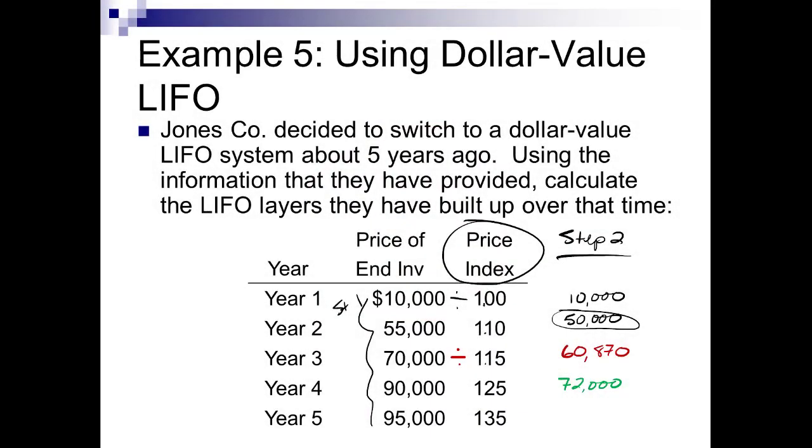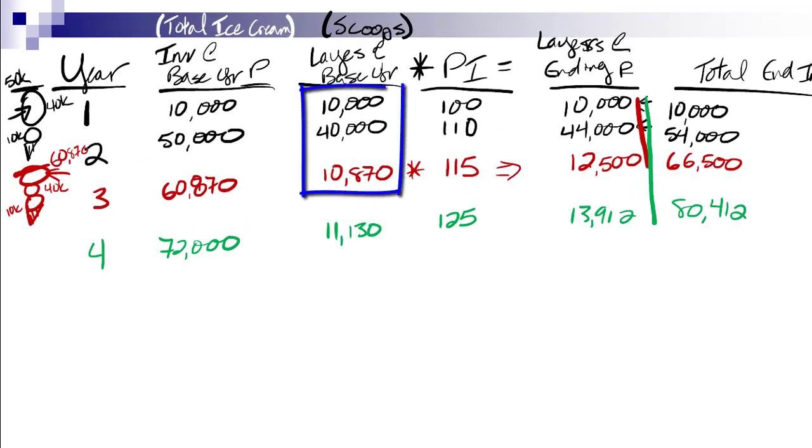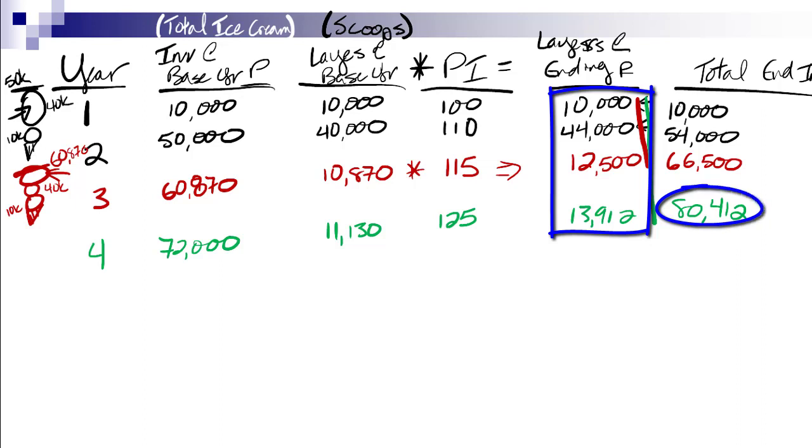Here are our first two steps. We start with step one, I gave you the $90,000. We take the $90,000 divided by the 1.25 and that gives us a base year value of $72,000. That's my total ice cream. I've got scoops already totaling up to $60,870, all these old layers. So I would have added a new scoop of $11,130. I take the $11,130 times the 1.25, that gives me $13,912. I add all those ending inventory values together and I end up with a total ending inventory in year four of $80,412.